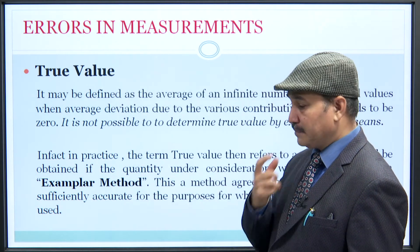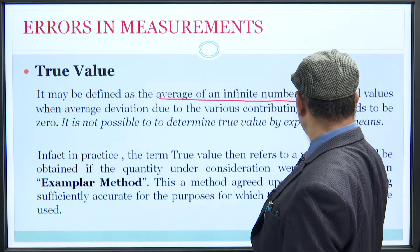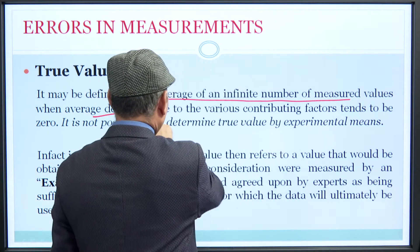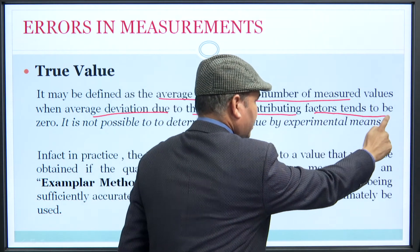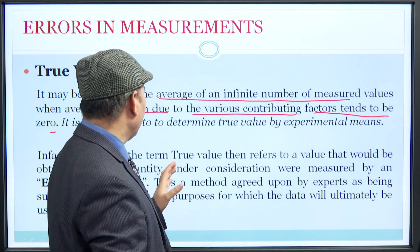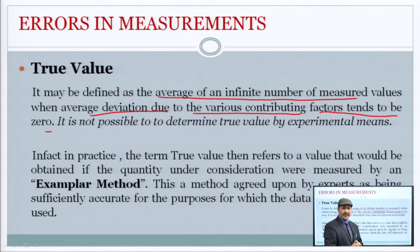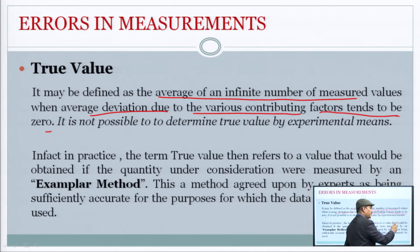True value — errors in measurement में true value का बहुत महत्वपूर्ण भूमिका है। It may be defined as the average of an infinite number of measured values, when average deviations due to the various contributing factors tends to zero. यानी अगर हम infinite measurements करें और उनका average लें — जैसे 4.1, 3.9, 4 — और सारे deviations का sum 0 आए, तो वो average ही true value मानी जाती थी।